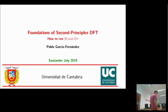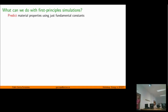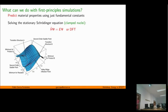Let's talk about how scale-up works. We call scale-up 'second principles.' So why would we want to go beyond first principles? Most of us have at least worked a little bit with first-principles simulations. The idea for this kind of calculation is that they allow us to predict the properties of a material just coming from the fundamental constants — the charge of the electron, the Planck constant, and so on.